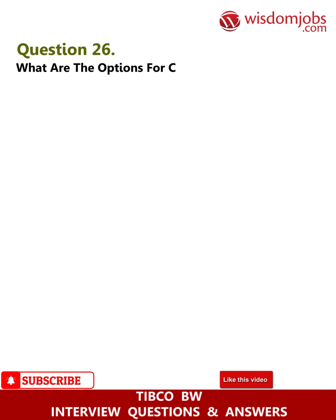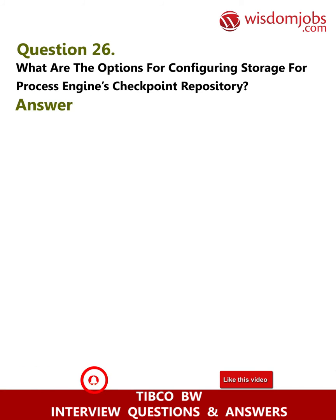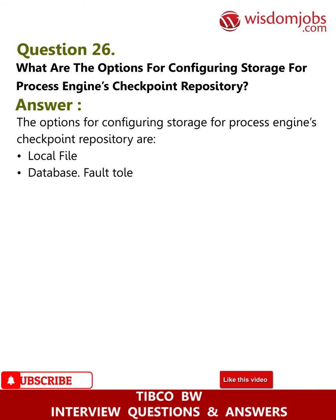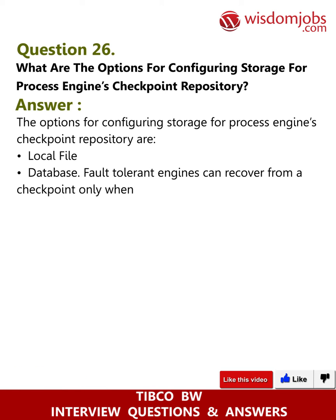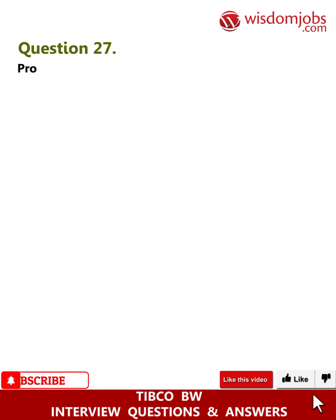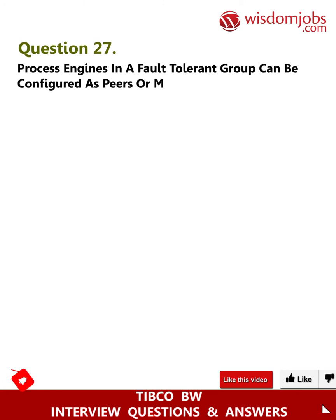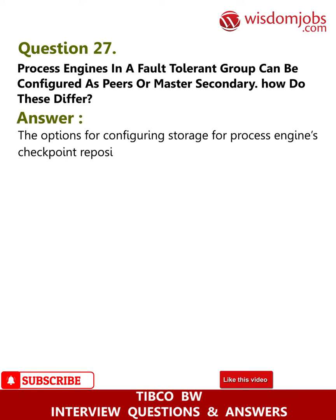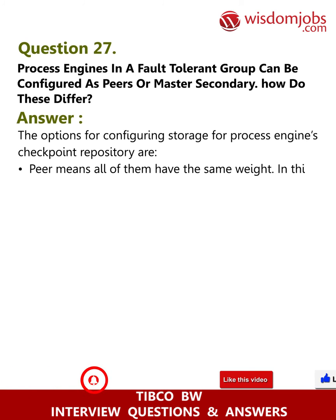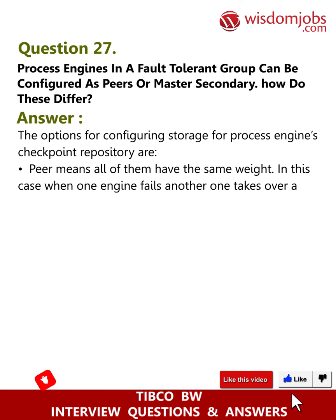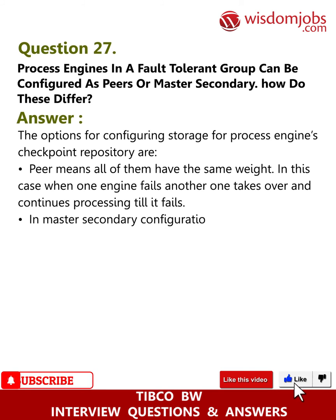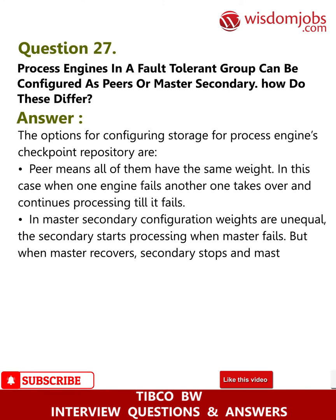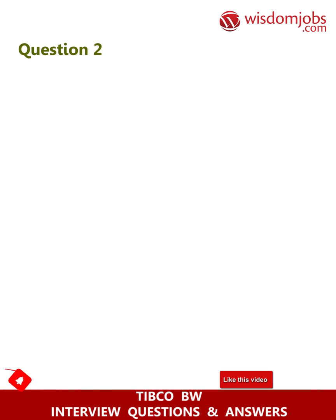Question 26: What are the options for configuring storage for process engines' checkpoint repository? Answer: The options are: PIA, meaning all engines have the same weight — when one engine fails, another takes over and continues processing until it fails. In a master-secondary configuration, weights are unequal — the secondary starts processing when the master fails, but when the master recovers, the secondary stops and the master continues processing.